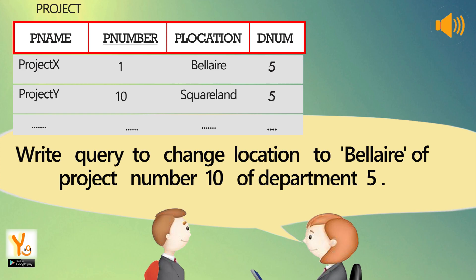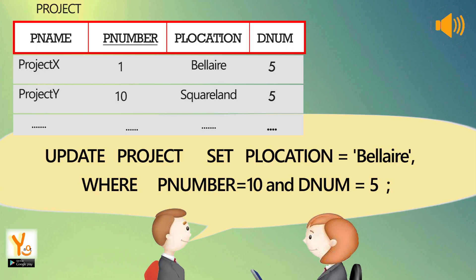Write a query to change the location to Bel Air of project number 10 of department 5. UPDATE project SET location = 'Bel Air' WHERE Pnumber = 10 AND Dnumber = 5.